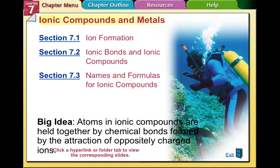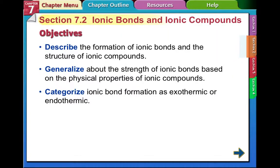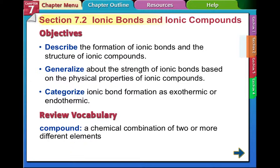We're going to move into section 2, Ionic Bonds and Ionic Compounds. Objectives: describe the formation of ionic bonds and the structure of ionic compounds, generalize about the strength of ionic bonds based on the physical properties of ionic compounds, categorize ionic bond formation as exothermic and endothermic. Remember what a compound is - a chemical combination of two or more different elements.